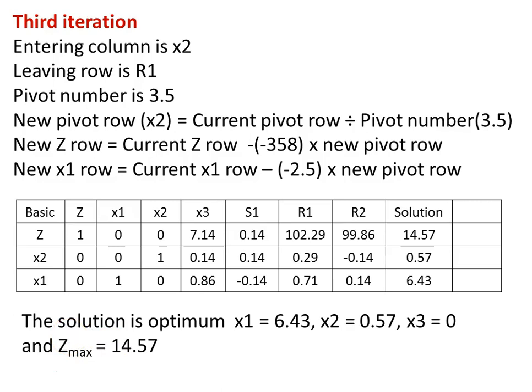There were two artificial variables and with two iterations we calculated the optimum solution for this maximization type of problem using the Big M method.